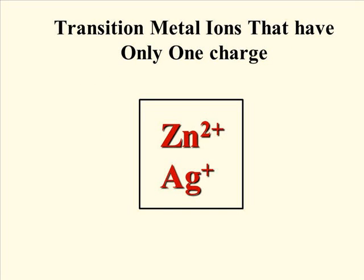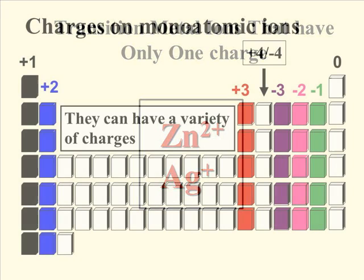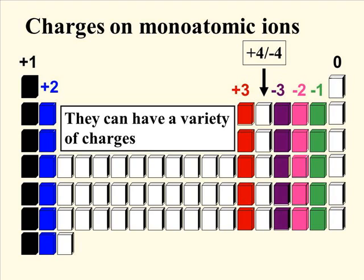The transition metal ions that have only one charge you also need to memorize: zinc with a +2 charge and silver with a +1 charge. While you can look up charges on the alkali and alkaline earth metals from the periodic table, and look up anion charges as well, you cannot look up transition metal charges.